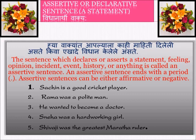The first example is 'Sachin is a good cricket player.' There is no exclamation and no question mark — it is a declaration. The second sentence is 'Rama was a polite man.' The third is 'He wanted to become a doctor.' The fourth is 'Sneha was a hard-working girl.' The fifth is 'Shivaji was the greatest Maratha ruler.' All five of these sentences are called assertive or declarative sentences.